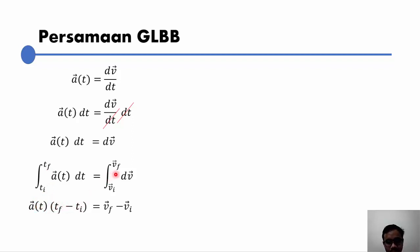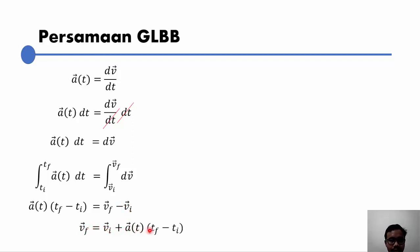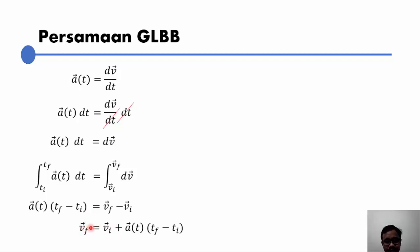Dan di sebelah kanan, integral dV itu adalah V, di mana V-nya kita gantikan dengan batas atas dikurang batas bawah. Kalau misalkan kedua ruas kita tambah dengan V_i, maka kita peroleh bahwa V_final sama dengan V_initial ditambah A dikali dengan (T_final dikurang T_initial). Sebenarnya kalau kita pahami dari sini, makna V_initial itu adalah kecepatan awal objek mulai diamati dalam interval waktu tertentu, bukan kecepatan awal gerak. V_final juga bisa kita definisikan sebagai kecepatan akhir objek diamati dalam range waktu tertentu.